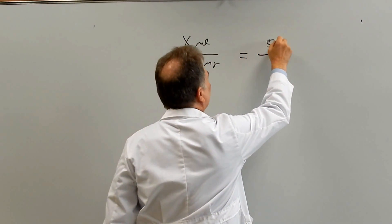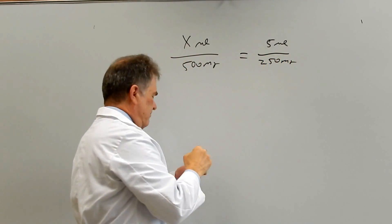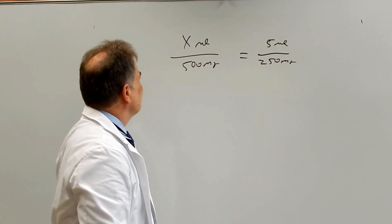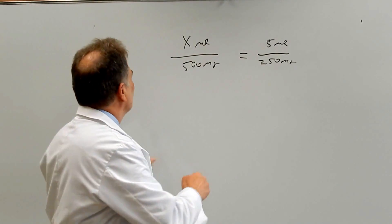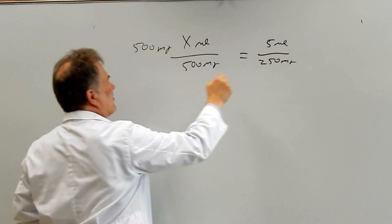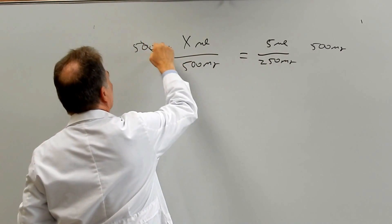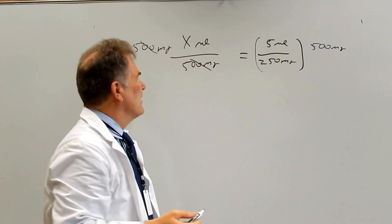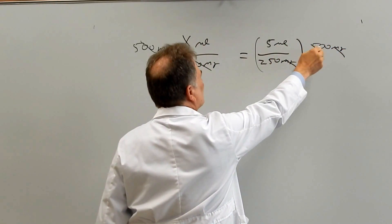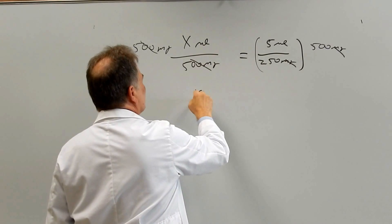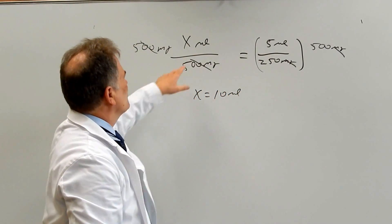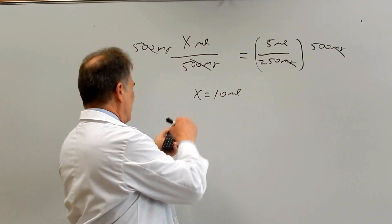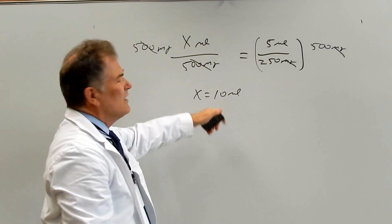We know there are 5 mls for 250 milligrams, so now we have a simple algebraic problem to solve for x. The long way is to isolate x by multiplying both sides by 500 milligrams — the milligrams cancel out and we're back to 5 times 500 divided by 250, so x equals 10 mls. The shortcut is to cross multiply: 500 times 5 divided by 250 gives us 10 mls.